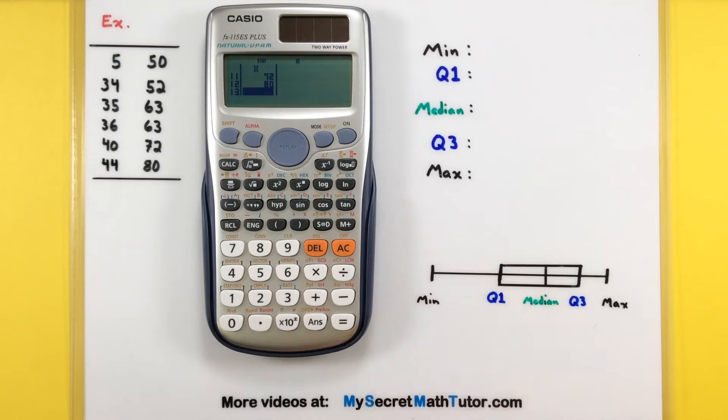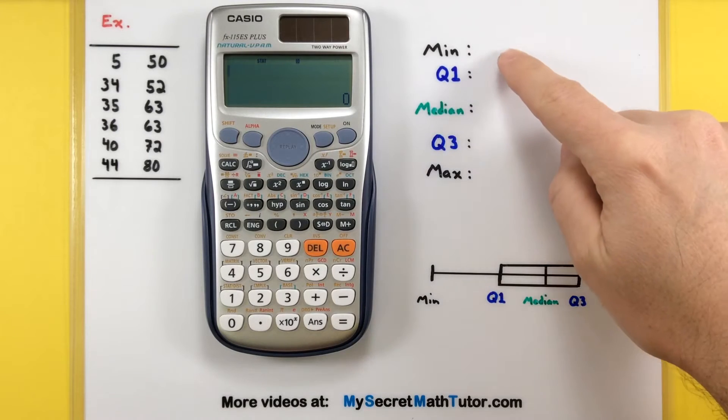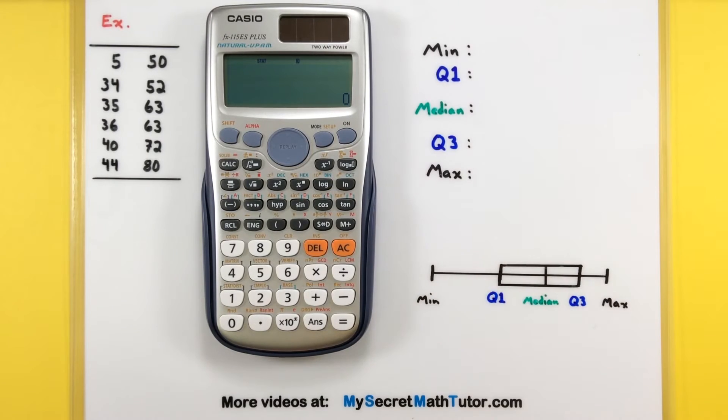From here you want to press the all clear button, but don't worry, everything is still in the calculator. We just need to get back to our screen so that we can get into those menus where we're doing the minimum and these quartiles. So now we're back on our main screen here.